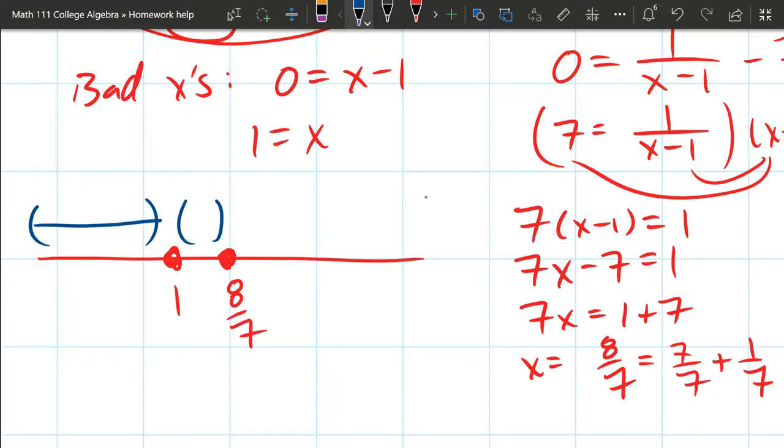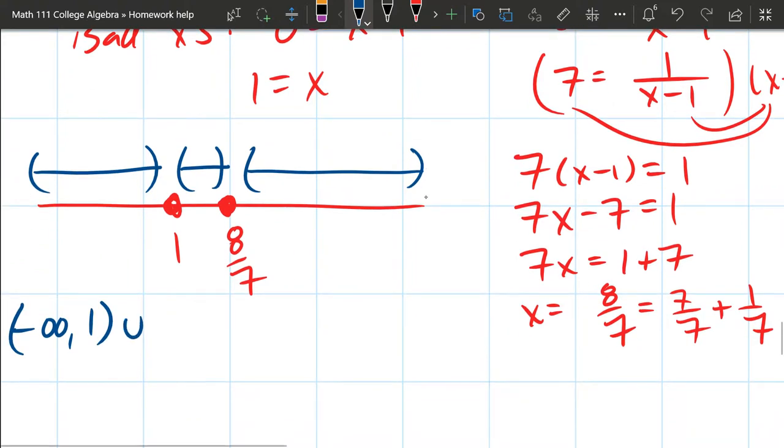There's a bunch right there. There's a bunch right there. Another big bunch over there. So I got minus infinity to one. You cannot include one because we just said one's a bad x value. We're going to start up right after one and go to eight sevenths. And then start again at eight sevenths and go to infinity.